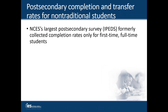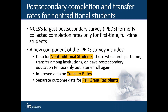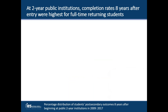The second analysis uses new data from the Integrated Postsecondary Education Data System, or IPEDS. IPEDS is our largest post-secondary survey, and it collects information directly from institutions of higher education. IPEDS formerly collected degree completion rates only for first-time, full-time undergraduate students. However, we know that these traditional students are only a part of the undergraduate population. A new component of the IPEDS collection includes data from non-traditional students, such as those who enroll part-time, transfer among institutions, or leave post-secondary education temporarily and later return. The new survey component also includes improved information on transfer rates and provides separate data for Pell Grant recipients and non-recipients. The expanded data on outcome measures are particularly important for two-year public institutions because they serve a larger population of non-traditional students.